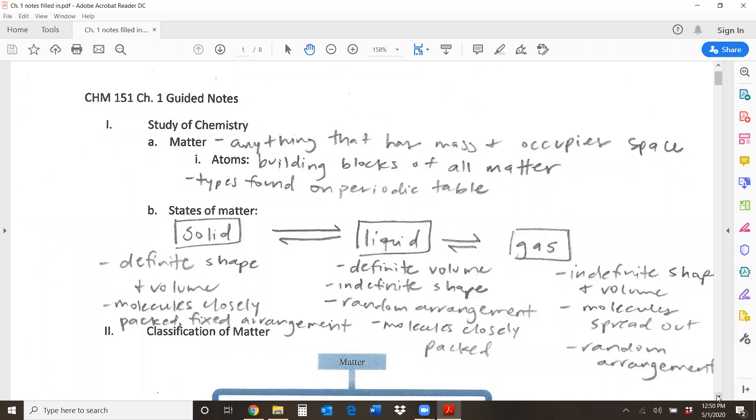So here chapter one is on matter and measurements. Matter is anything that has mass and occupies space or has volume. And matter is made up of atoms. So atoms are the building blocks of all matter. Everything around us is made up of these tiny things called atoms. And these atoms are found on the periodic table. So every element indicates a type of atom that is distinct from the others.